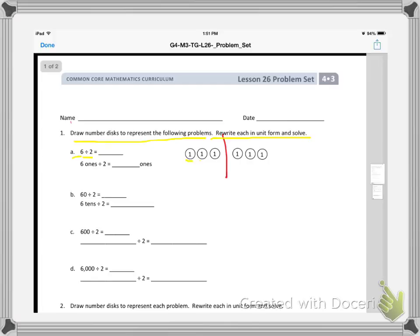So they drew 6 number disks: 1, 2, 3, 4, 5, 6. And they put ones in the center because these are really worth 6 ones. So then they were dividing them by 2, so they made 2 groups, group 1, group 2. And they passed out the disks, 1 to each group. And the number of disks in each group is 3. So 6 divided by 2 is 3. 6 ones divided by 2 is 3 ones.